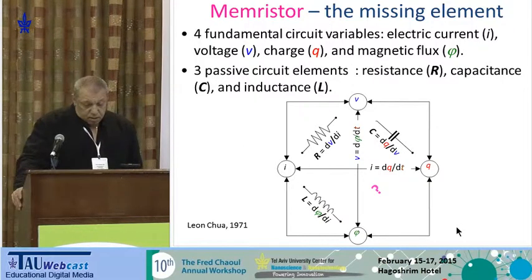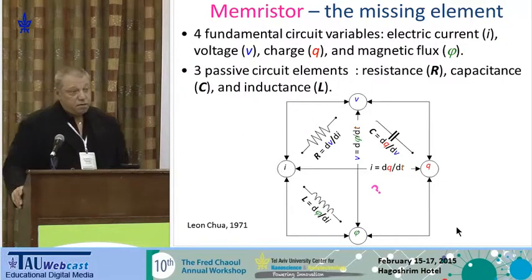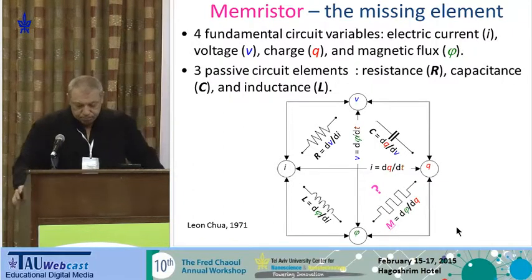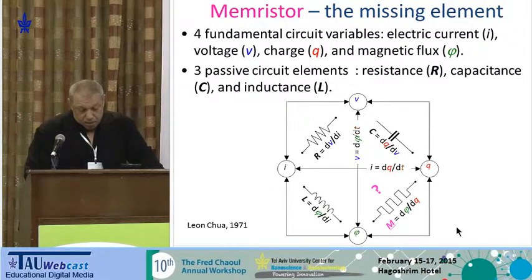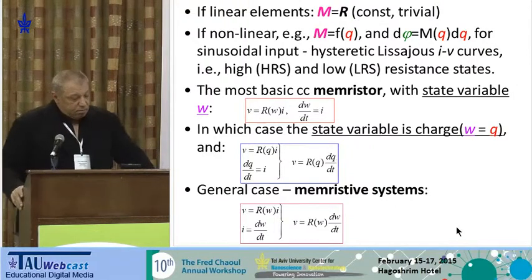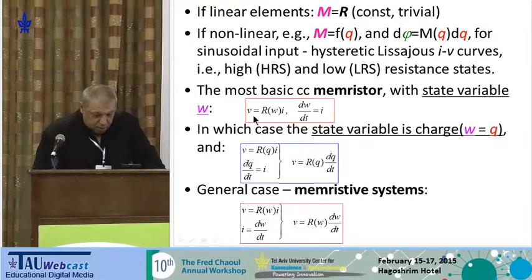What about the missing corner — the relationship between charge and magnetic flux? It looks asymmetrical. Professor Leon Chua in 1971 submitted that, just out of sheer symmetry considerations, there must be a fourth passive element of an electric circuit, which he called the Memristor — in other words, a memory resistor. It remained a theoretical curiosity until 2008, more than 30 years later, when HP Labs realized the first Memristor.